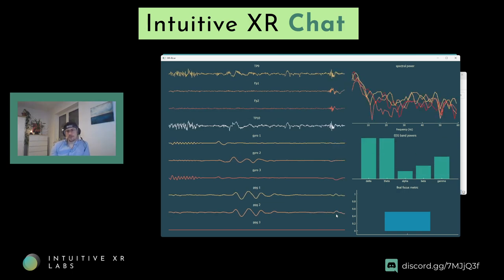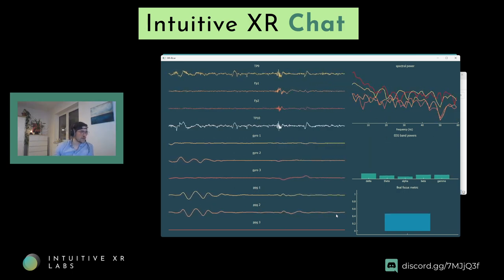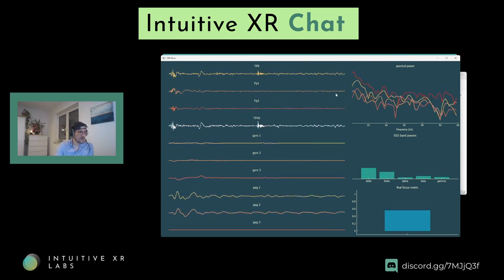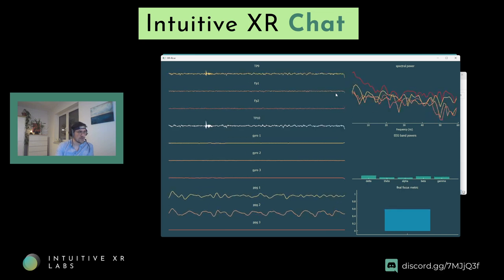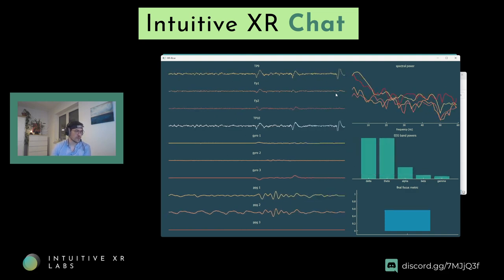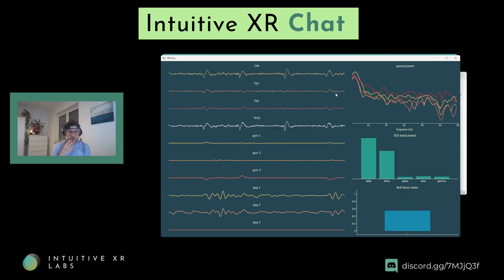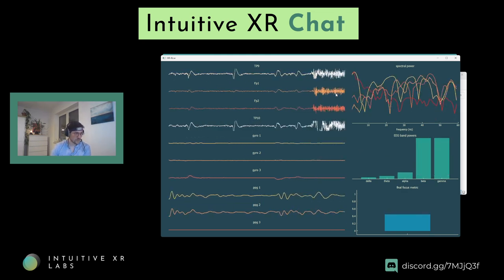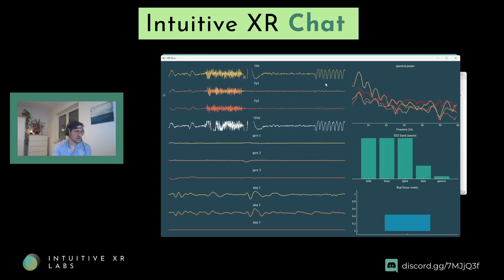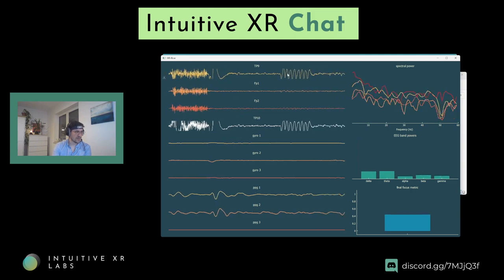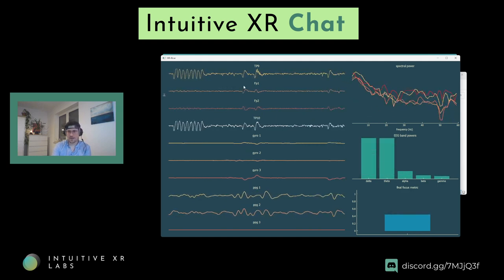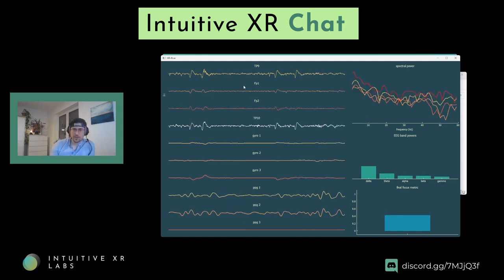This is real-time EEG, and a rather okay signal — it looks like nothing is going on, which just means there are no strong artifacts visible. But if I clench my teeth, you can see very strong muscle activity. If I blink a lot, that's eye blink activity. You don't necessarily want these in the data because then you're not measuring brain data but something else.